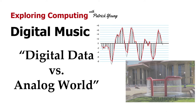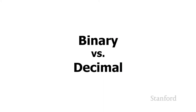This week we've looked at a number of differences between what happens in the computer and what we're used to in real life. The first difference we saw was that we use decimal numbers but computers use binary numbers. The second difference is the difference between analog and digital. The concept of binary numbers really does pervade computing.